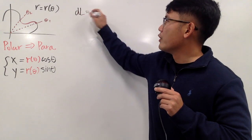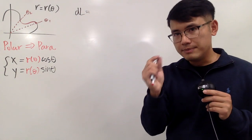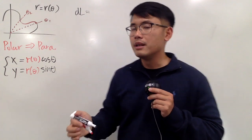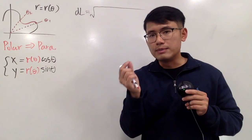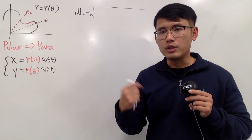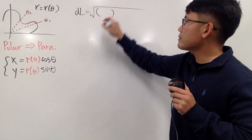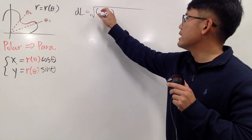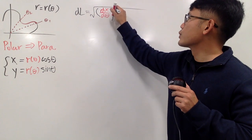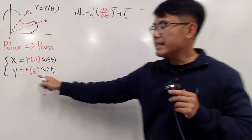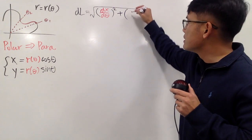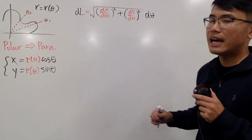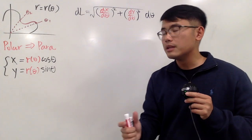Here is dL — the small change in arc length. This represents a small segment, and we can use the Pythagorean theorem. It's going to be the square root of the small change in x squared plus the small change in y squared. We differentiate with respect to theta, giving us √((dx/dθ)² + (dy/dθ)²) dθ. This is the arc length formula for parametric equations.